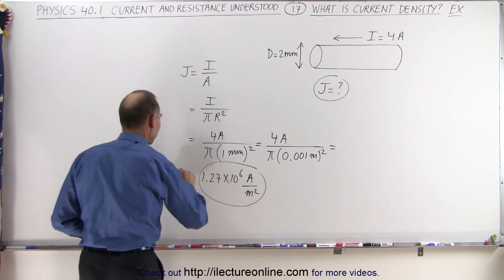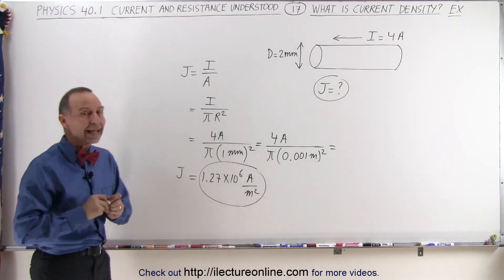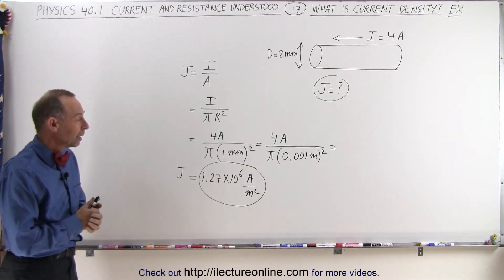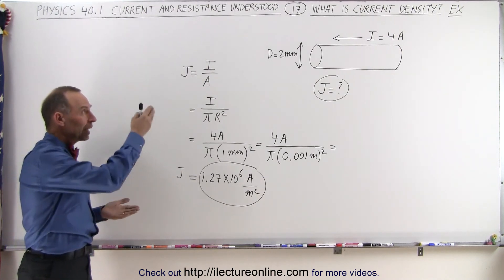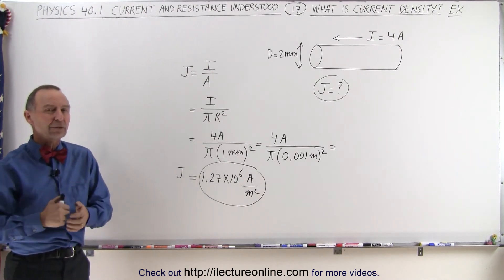Now notice the size of that. That's over a million amps per square meter. Now current density is sometimes used to see if the material you're using for a conductor can handle that kind of current density.